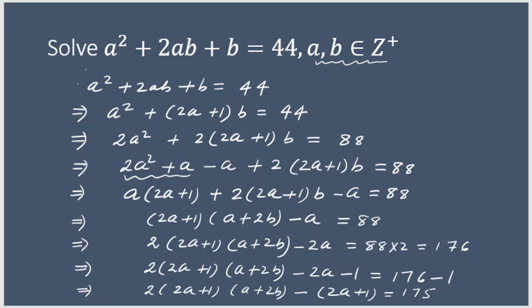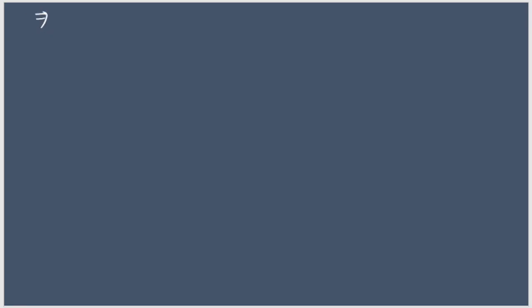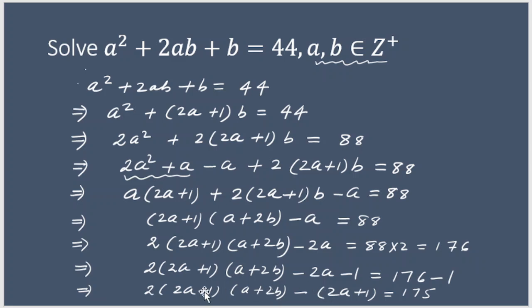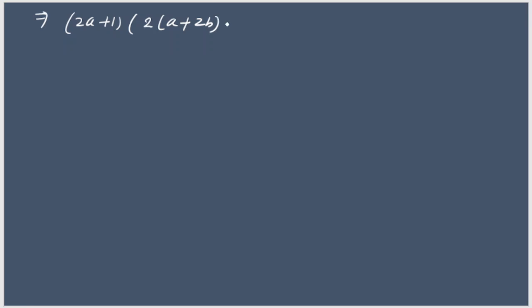Moving to the next page. We have (2a + 1)(2a + 4b − 1) = 175. Since a and b are both positive integers, it is obvious that (2a + 1) will be less than (2a + 4b − 1). Now if I factorize 175: 175 = 1×175, 175 = 5×35, 175 = 7×25. We also have 25×7, 35×5, and 175×1, but since the first factor must be less than the second, we only consider: 1×175, 5×35, and 7×25.